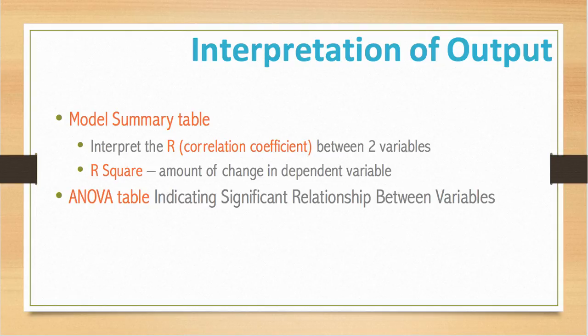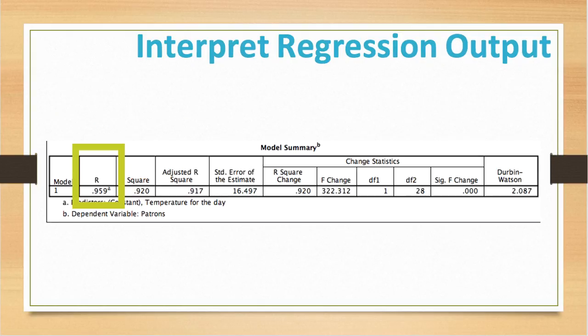The model summary table provides the value of R and R squared for the model that has been derived. R is your correlation coefficient between the two variables, and in this case, the correlation is between the temperature that day and the number of patrons that attended the pool. It is very high at .959.